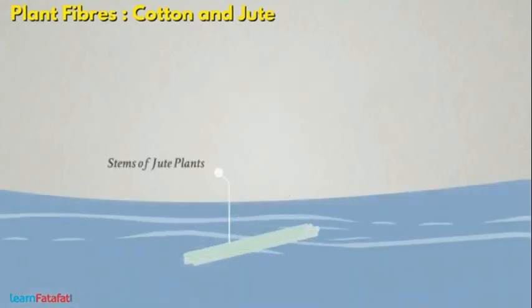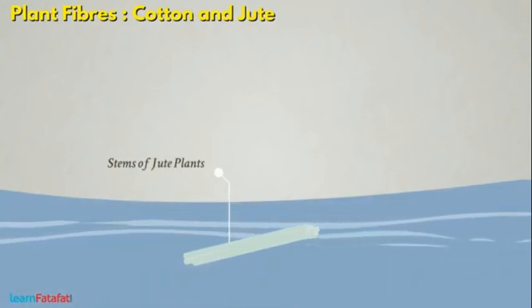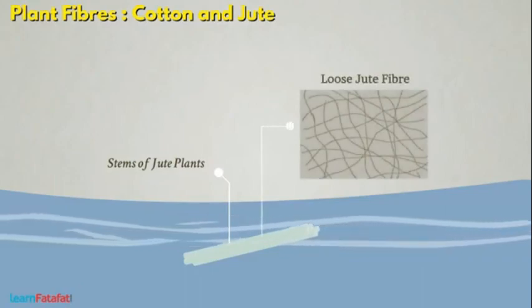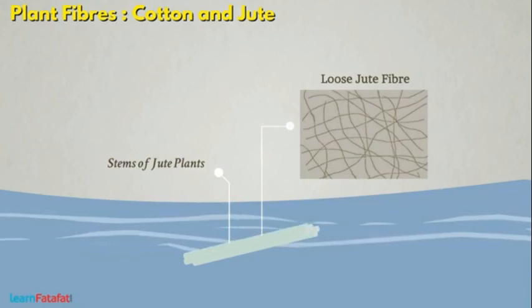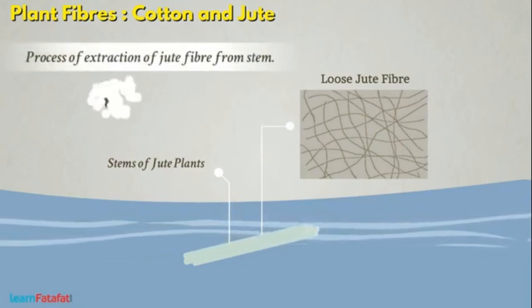Stems of jute plants are bundled and kept in soft running water for a few days. During this time, the fibers become loose from the stem and can be easily separated. The process of extraction of jute fiber from the stem is called retting.